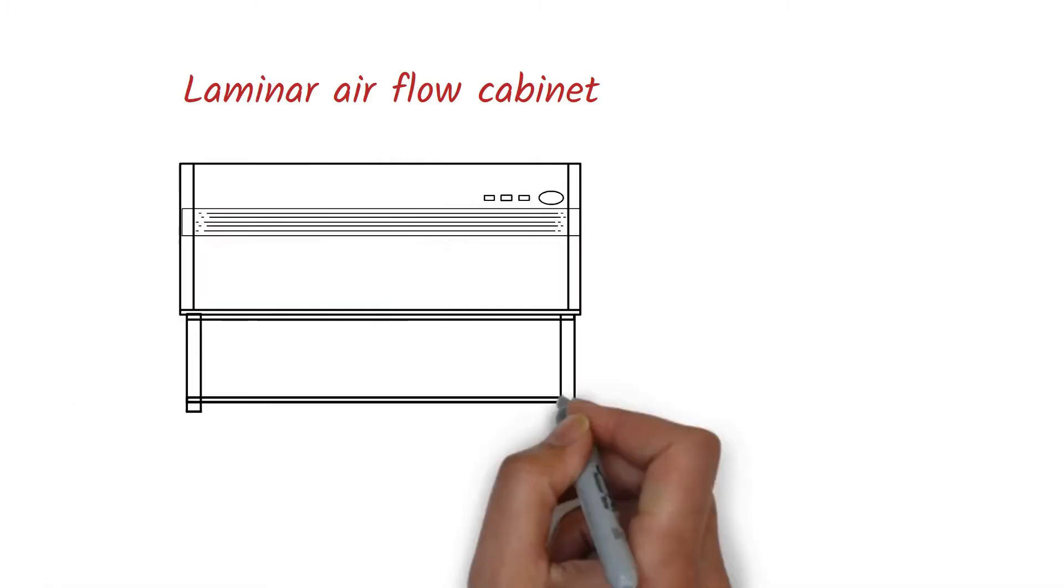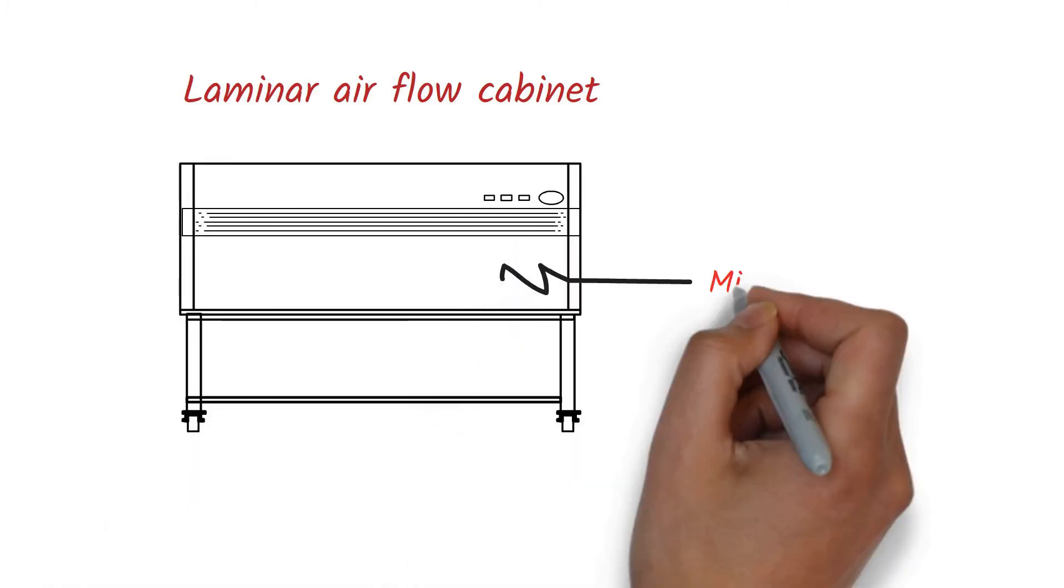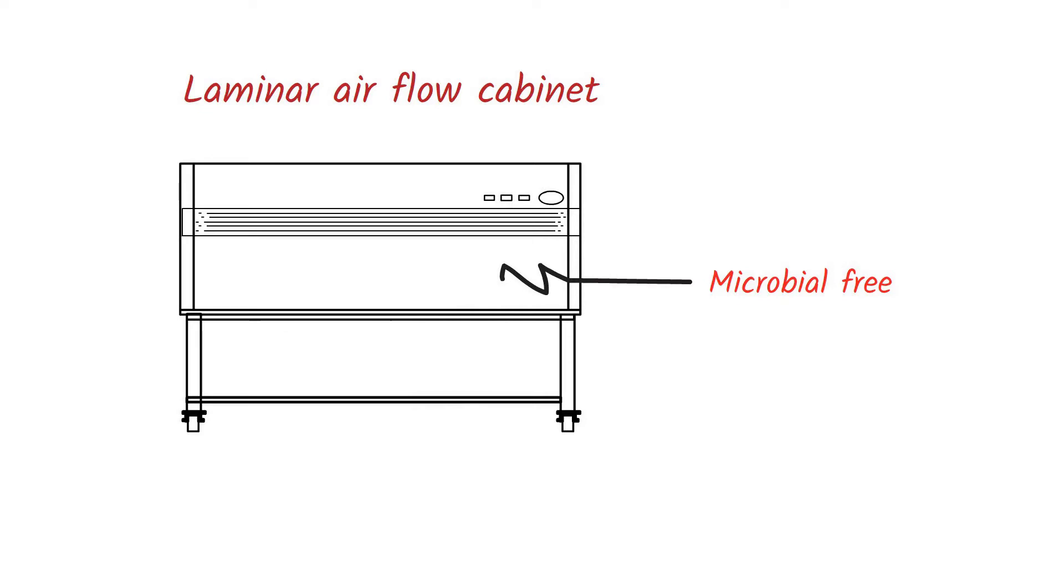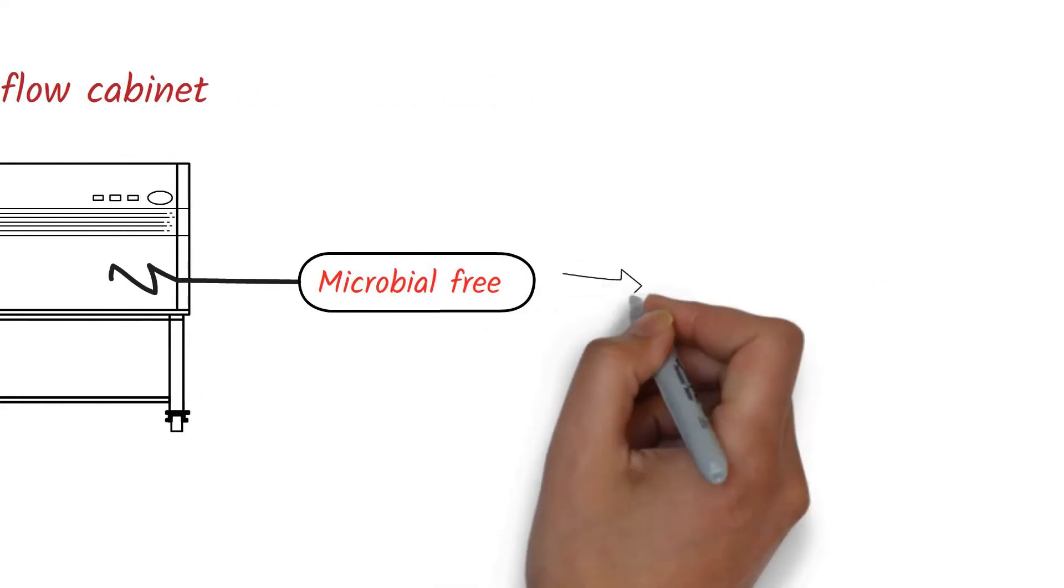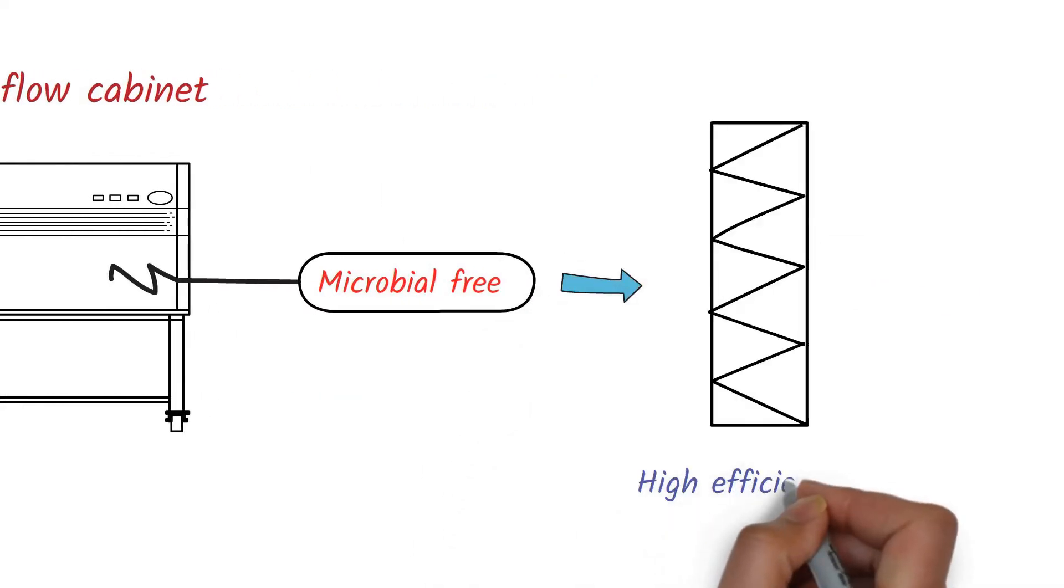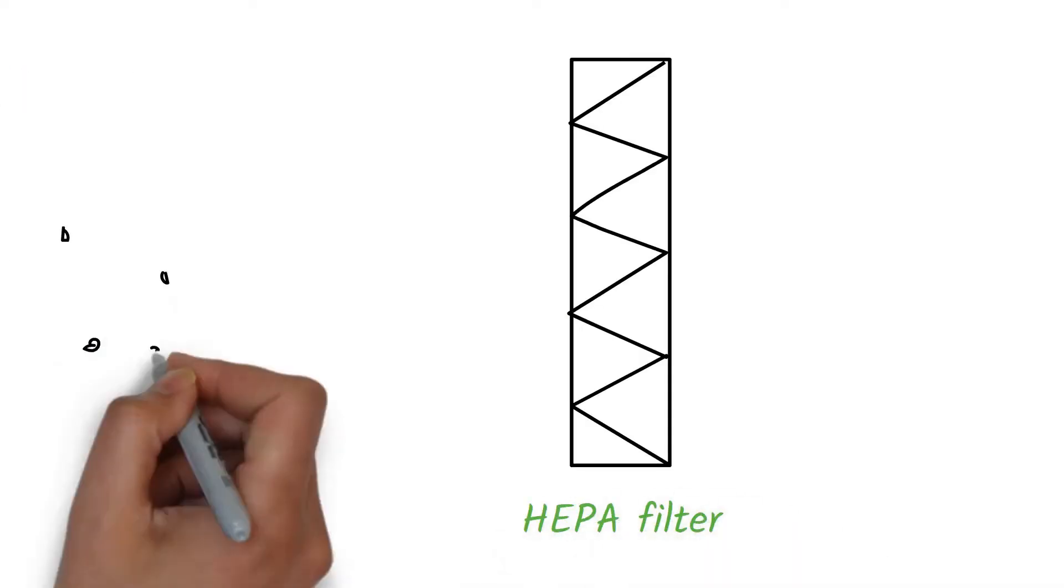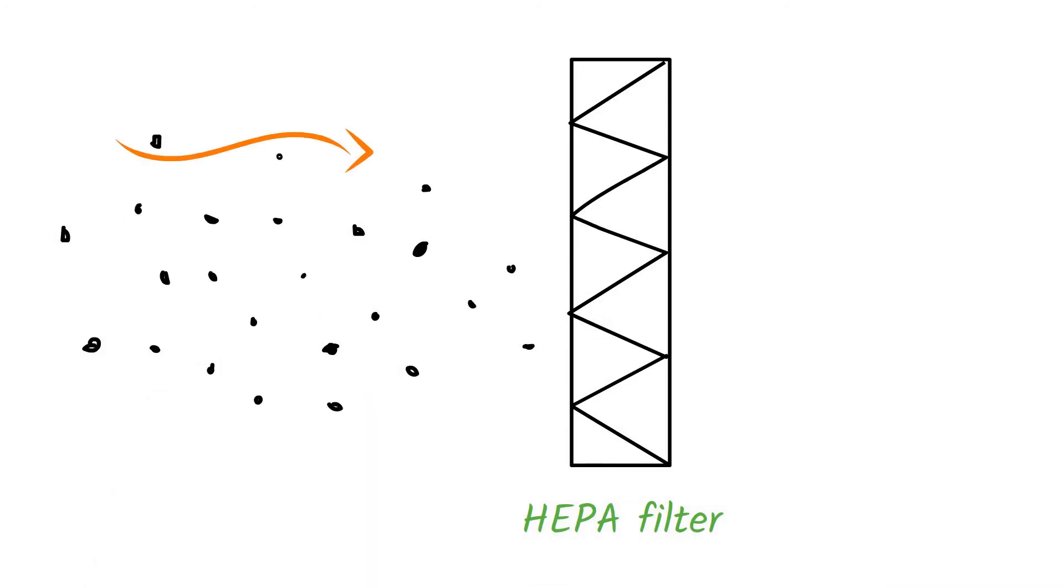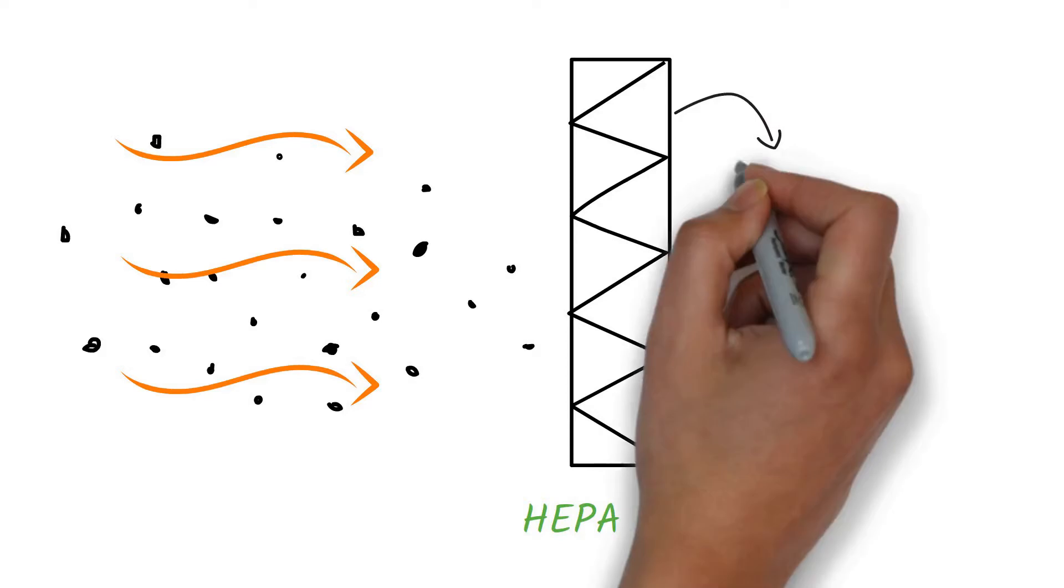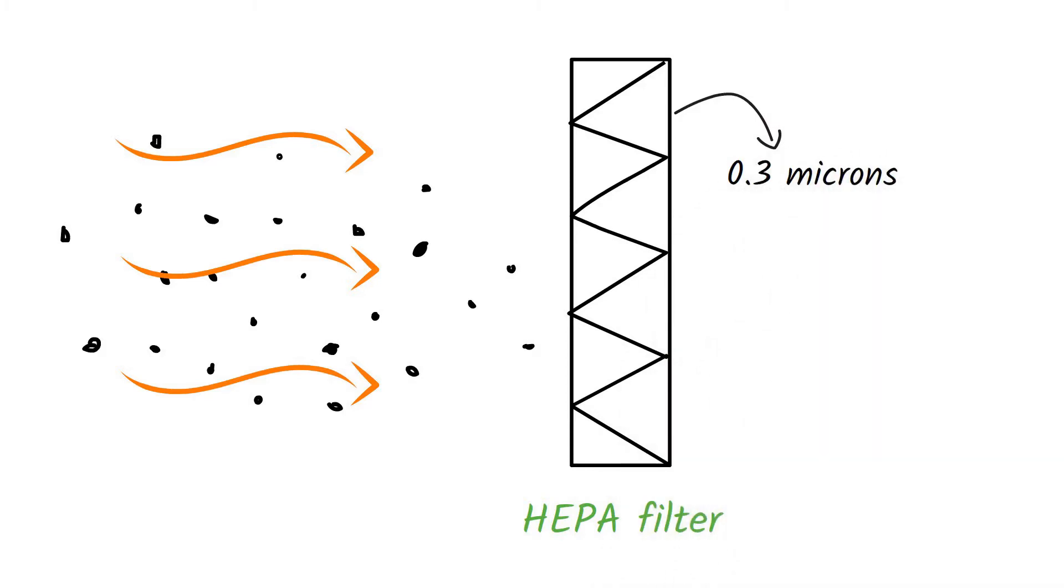A laminar airflow cabinet is an enclosed unit that creates a microbial-free environment. This microbial-free environment is created by high-efficiency particulate air filters, which are popularly known as HEPA filters. These HEPA filters capture all the airborne particles that enter the cabinet. The pore size of HEPA filter is usually 0.3 microns, which can retain bacteria, fungal spores and other particles.